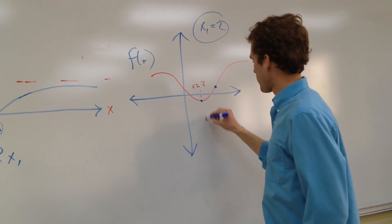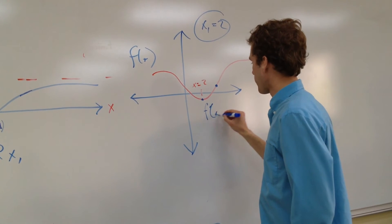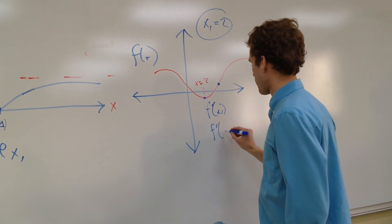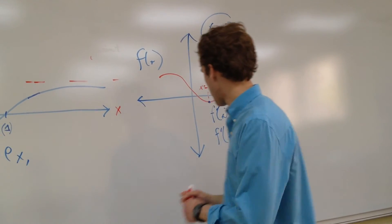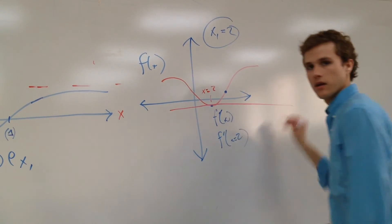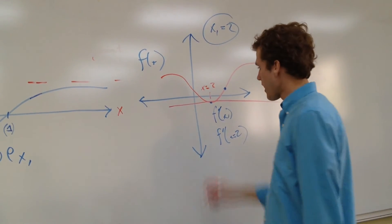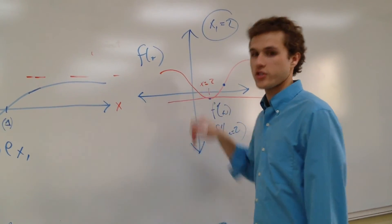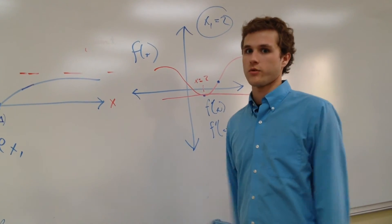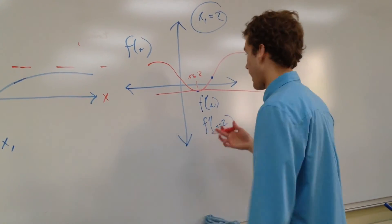We go in, we take f prime of this point right here, we're taking f prime of x equals 2, and what do we get? Well, we get a tangent line, but the tangent line is completely horizontal, because at this point, this is where the graph is changing direction, and so since it's changing direction, the derivative is 0, and it's useless.